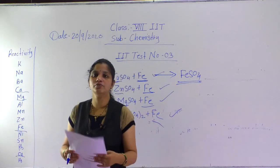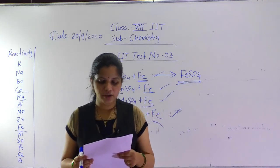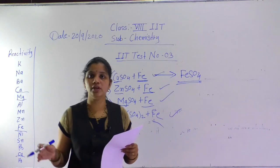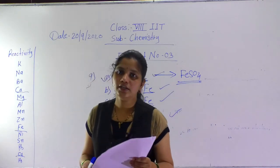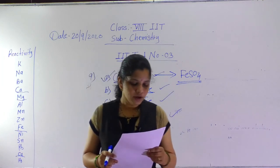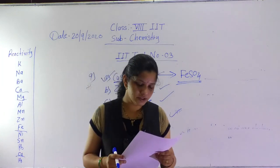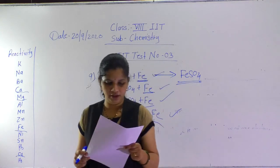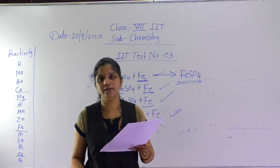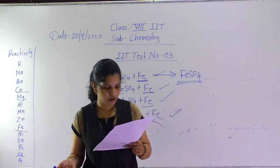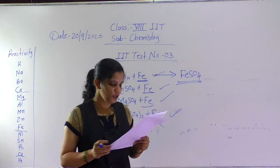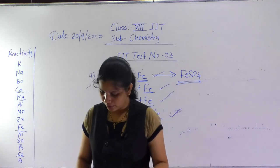Question number 22: natural gas stored under high pressure is called CNG. It is mostly used in gas cylinders. Question number 23: products obtained by the process of destructive distillation of coal are coke, coal tar, and coal gas. Question number 24: the least polluting fuel for vehicles is CNG. Question number 25: when coal burns in air, carbon dioxide is formed.